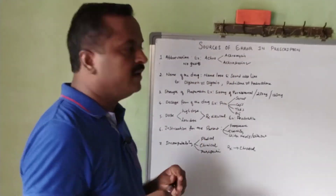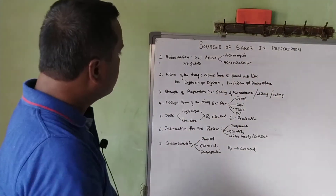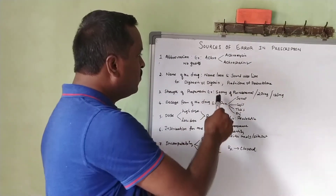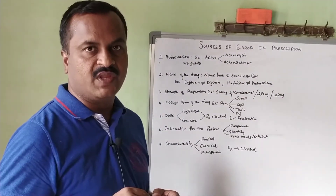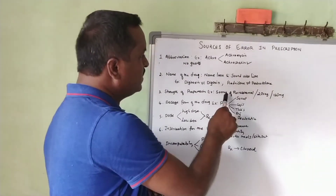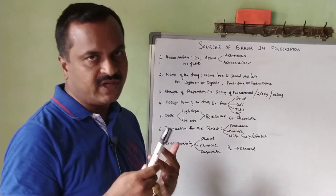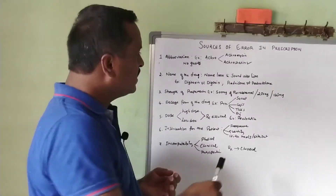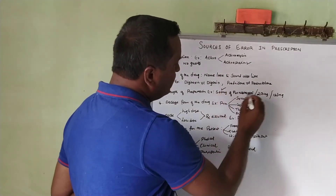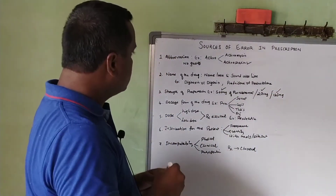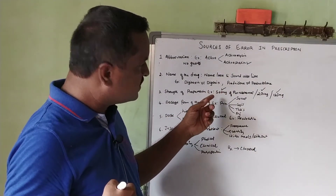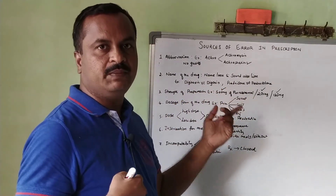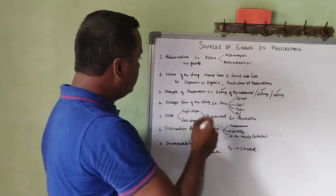The third error is the strength of the preparation. This is always a source of confusion for the pharmacist regarding what strength to dispense to the patient. For example, if the prescriber writes 'paracetamol 500' without specifying the unit, the pharmacist must clarify whether it is 500 mg, 250 mg, or 125 mg. When no strength is mentioned, it is the pharmacist's responsibility to clarify before dispensing.